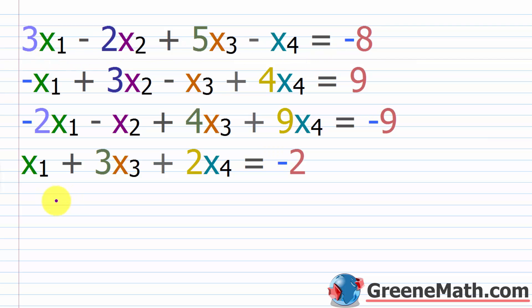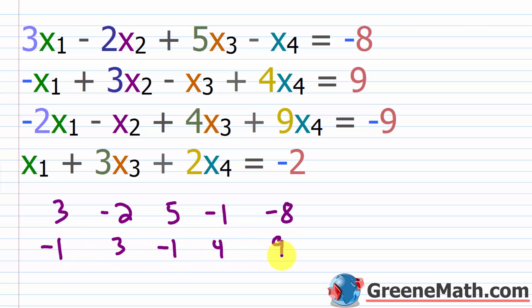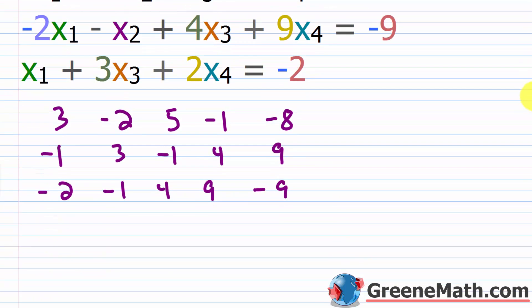So we start with the first equation: 3, negative 2, 5, negative 1, negative 8. The second equation: negative 1, 3, negative 1, 4, 9. The third equation: negative 2, negative 1, 4, 9, negative 9. In the last equation, notice there's no X₂, so we write a zero as the coefficient for that variable as a placeholder: 1, 0, 3, 2, negative 2.